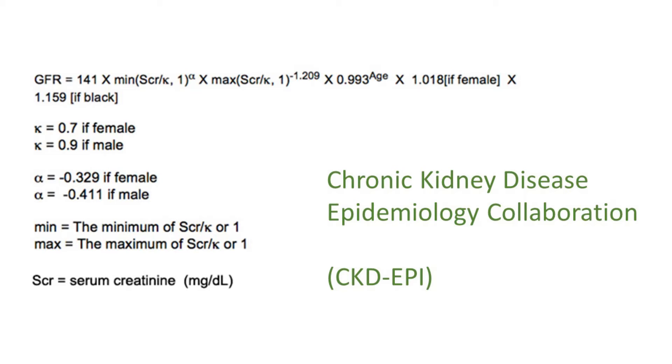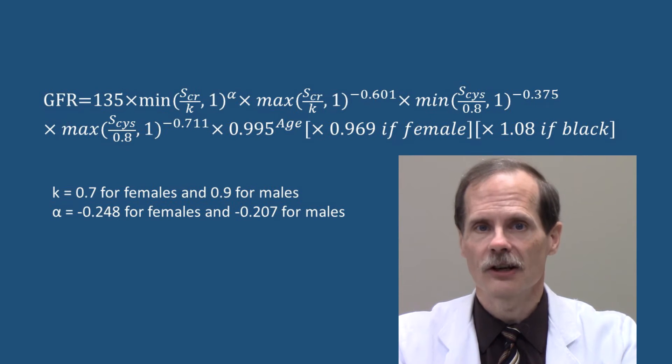The equation is a bit complex, and unlike Cockcroft-Gault, can't be performed easily without a scientific calculator. The equation uses serum creatinine concentration, serum Cystatin C concentration, age, gender, and race.